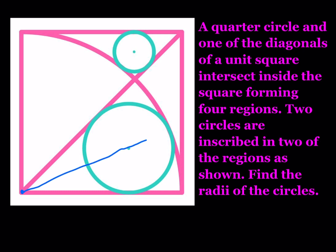Let me draw the segment that goes through the center. This is the center of my larger circle; let's call the radius of the circle a. I'll drop a perpendicular here, because that's also going to be my radius a. The radius is perpendicular to the tangent line. Since this is a unit square and the quarter circle is inscribed in that square, its radius is one. So from the center of the quarter circle, taking out a, this piece right here should be 1 minus a.